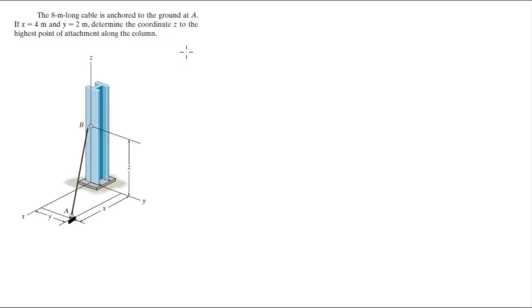So first we're going to find the position vectors. A sits at 4i because x is 4, plus 2j because y is 2, plus 0k because it has no magnitude sitting right at the floor.